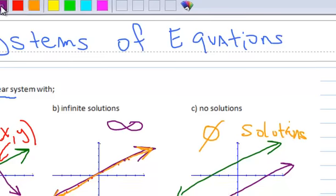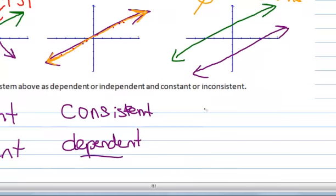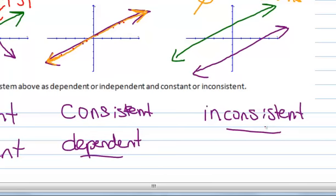We can label this one as being an inconsistent system. And then dependent, independent doesn't really matter for this one because it's considered to be inconsistent. So that's the end of this video, and I'm going to do some examples in the videos following.